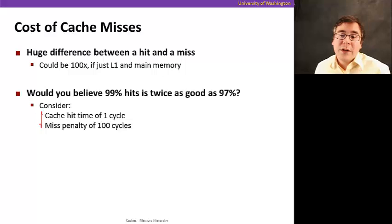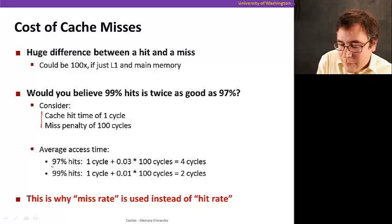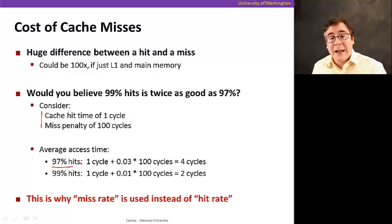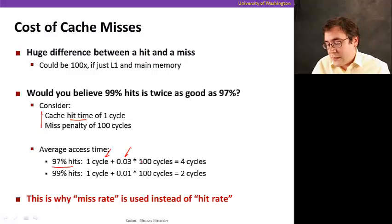And in this example here, let me show you. Say that a cache hit costs one cycle and the penalty of taking a cache miss is 100 cycles. It means that the average access time for a 97% hit rate is one cycle, which you always take the hit time, plus 3% of the time you're going to pay 100 cycles, which is your penalty. That leads to a four cycle average cost.